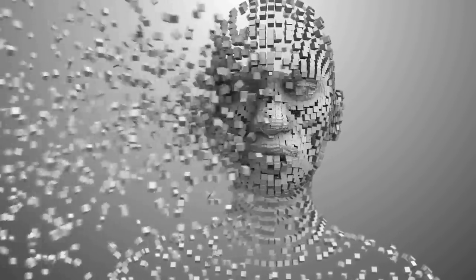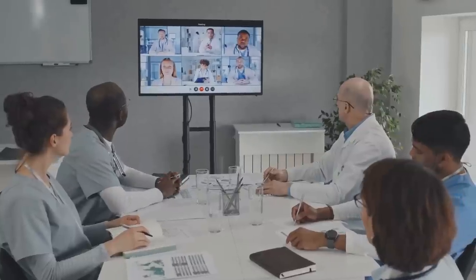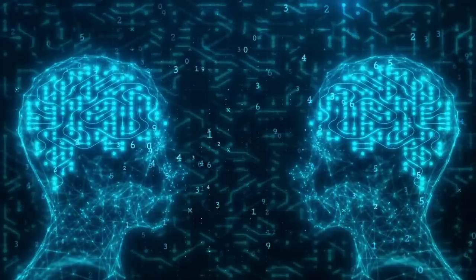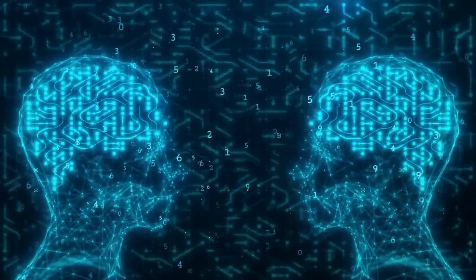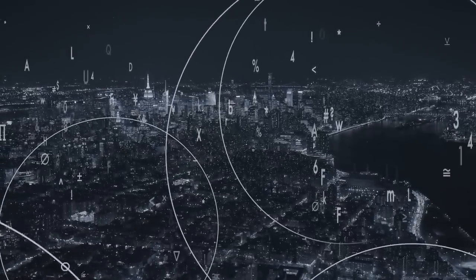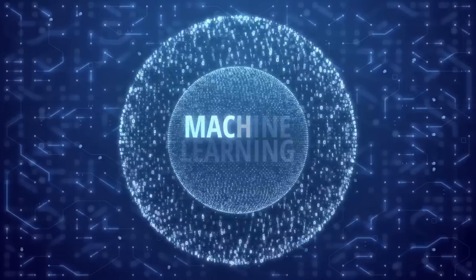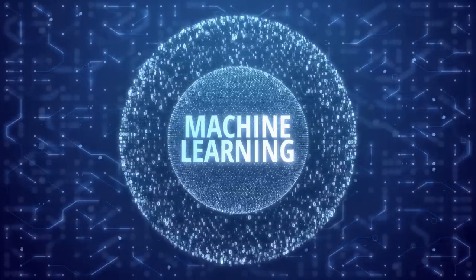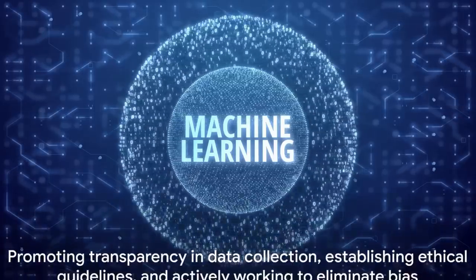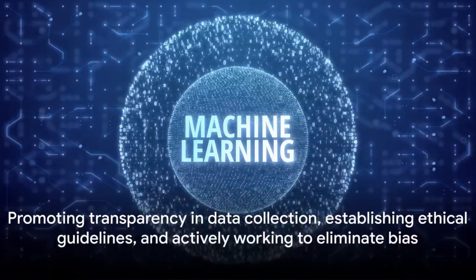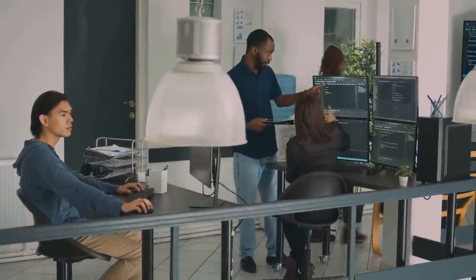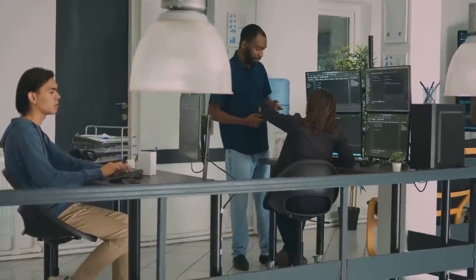Finally, there's the risk of biased outcomes. Machine learning models are only as good as the data they're trained on. If this data is biased in any way, the model's predictions and decisions will be biased too. This can lead to unfair outcomes such as discriminatory hiring practices or unjust law enforcement. To combat this, we need to carefully curate our training data and regularly audit our models for bias. But these challenges aren't insurmountable. By promoting transparency in data collection, establishing ethical guidelines, and actively working to eliminate bias, we can work towards a future of machine learning that is both powerful and fair.